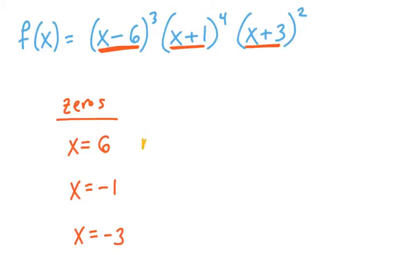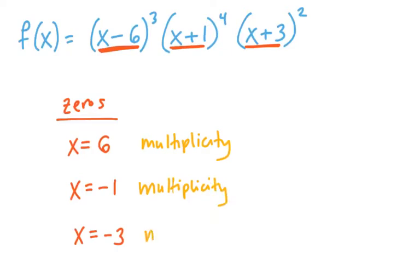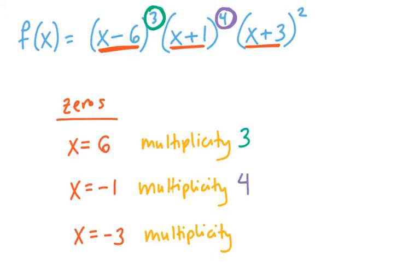Now we'll note the multiplicity for each. Because we have the actual equation of f of x, we can get the multiplicity right from the exponent. X equals six has a multiplicity of three because that factor is being cubed. X equals negative one has a multiplicity of four because that term is being raised to the power of four. And x equals negative three has a multiplicity of two because that term is being squared. That's the kind of analysis we'll want to feel comfortable doing with a good understanding of zeros and their multiplicities.